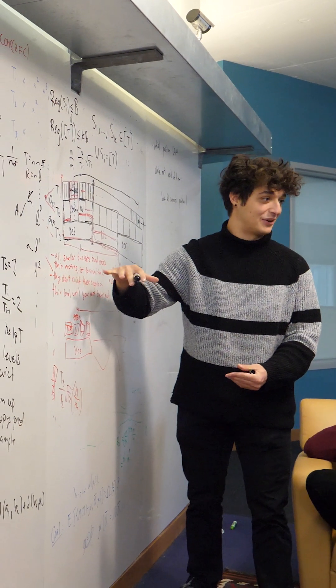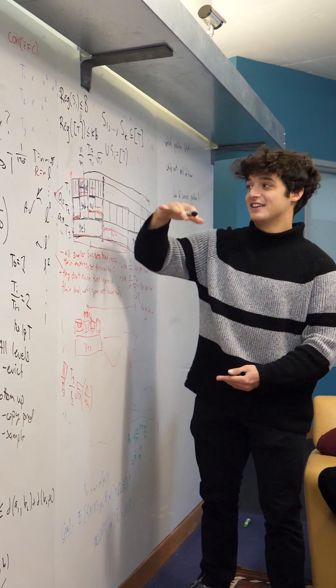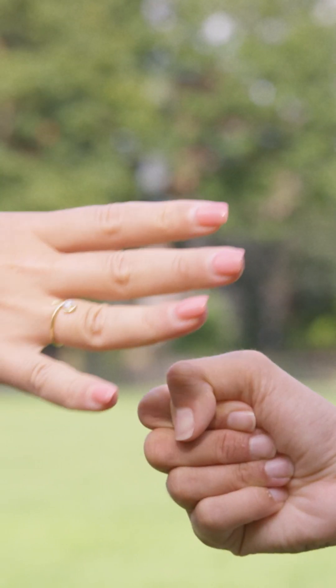Game theory is very important. It describes any situation in which you have multiple agents, whether it be people or machines, making decisions in a shared environment. It's not just rock, paper, scissors and Parcheesi.